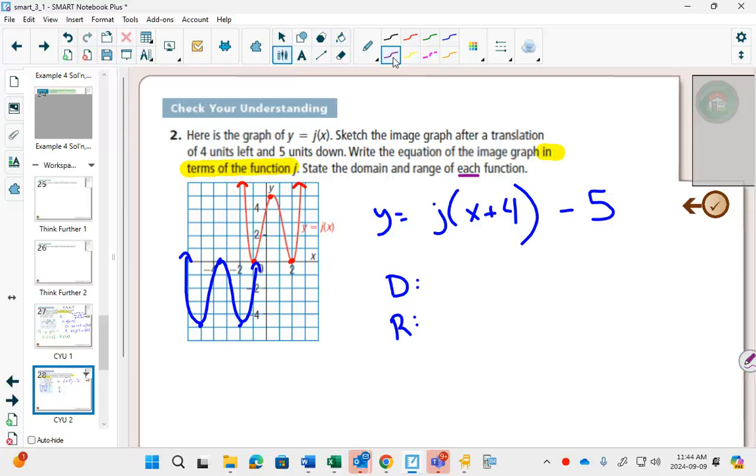So my domain for my blue one, okay, whoops, that's not blue anymore, is everything. Again, I can write it this way, or I can go negative infinity to infinity. I'll just write that down. At the beginning, I'll probably do both for a while, and then I'll try to alternate between notations. So we keep practicing both.